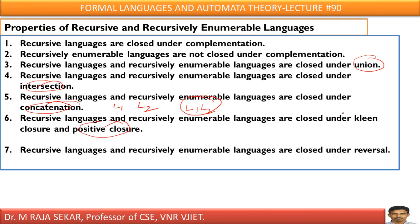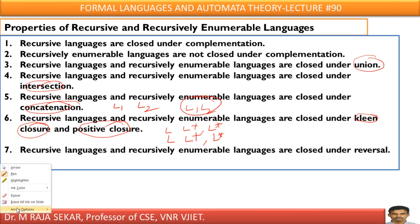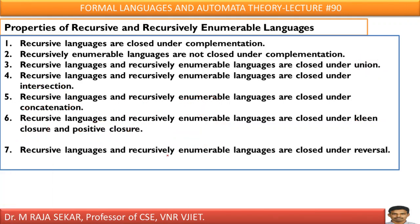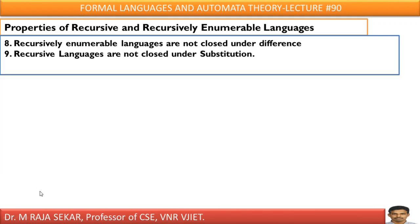Recursive language and recursively enumerable language are closed under Kleene closure and positive closure. I already discussed what is Kleene closure and positive closure in my initial lectures. If L is a recursive language, then L+ (positive closure) and L* (Kleene closure) are also recursive languages. If L is a recursively enumerable language, then L+ and L* are also recursively enumerable languages. They are also closed under reversal — if L is a recursive language, then L^R is also a recursive language, and if L is a recursively enumerable language, then L^R is also a recursively enumerable language.